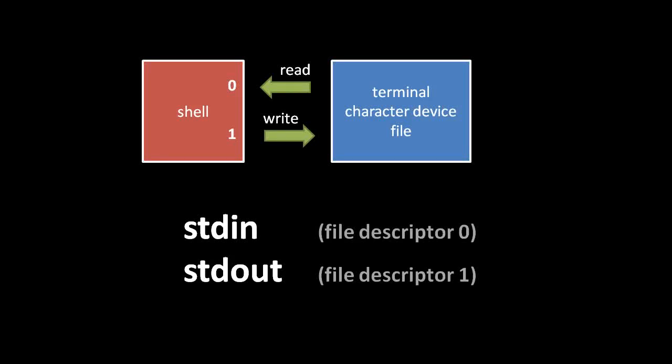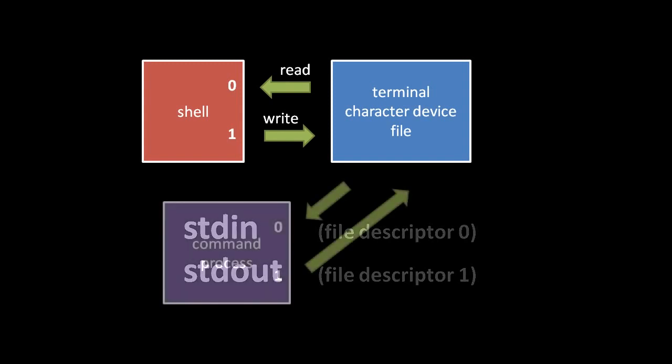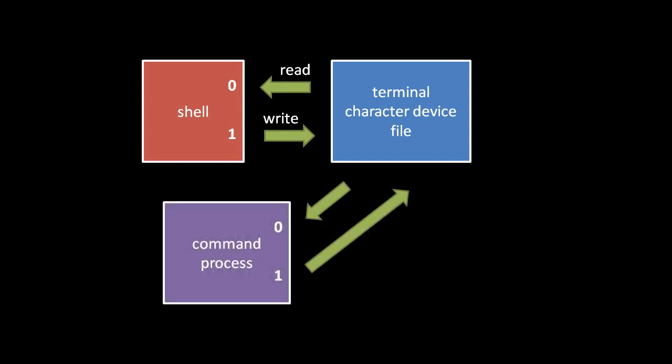By convention in UNIX, processes expect to inherit two standard open file descriptors: file descriptor 0, which we call standard in, for reading from a terminal, and file descriptor 1, called standard out, for writing to that same terminal. Your shell is no exception and should have both standard in and standard out. When the shell spawns off processes when you run a command, those commands expect to inherit standard in and standard out.